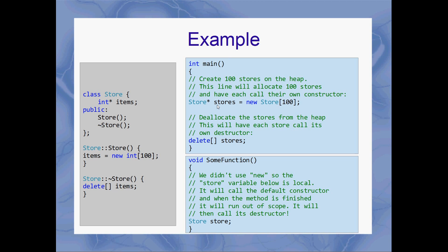In the constructor, they're each going to allocate a little array of 100 integers. So that single line — 100 times 100 times 4 bytes for each int — makes about 40,000 bytes worth of data on the heap. Which means I'd better delete all that data and give it back to the heap. `delete[] stores` is going to call the destructor for every single one of those stores, and inside the destructor, each of those stores is going to deallocate the little array that it allocated.